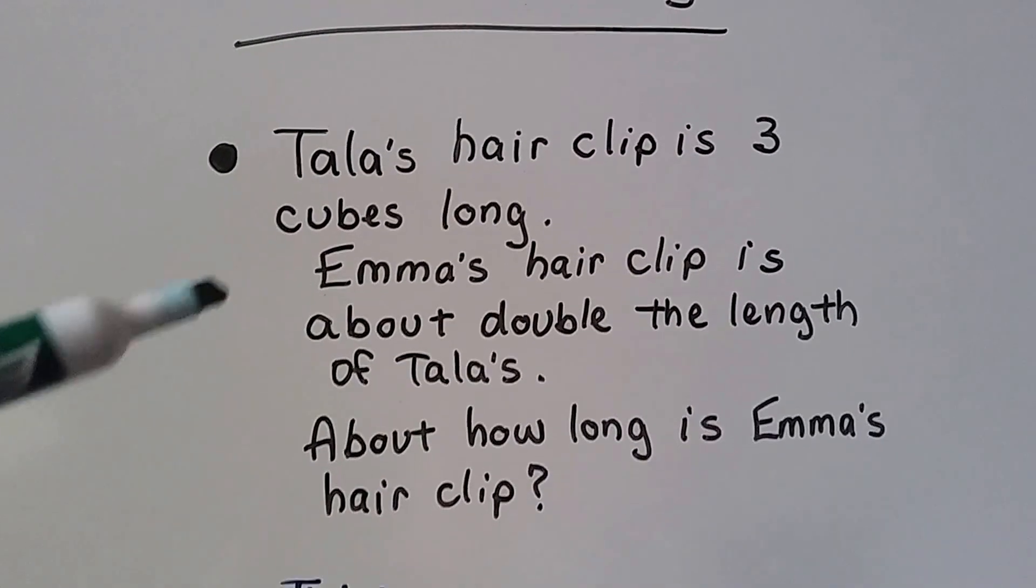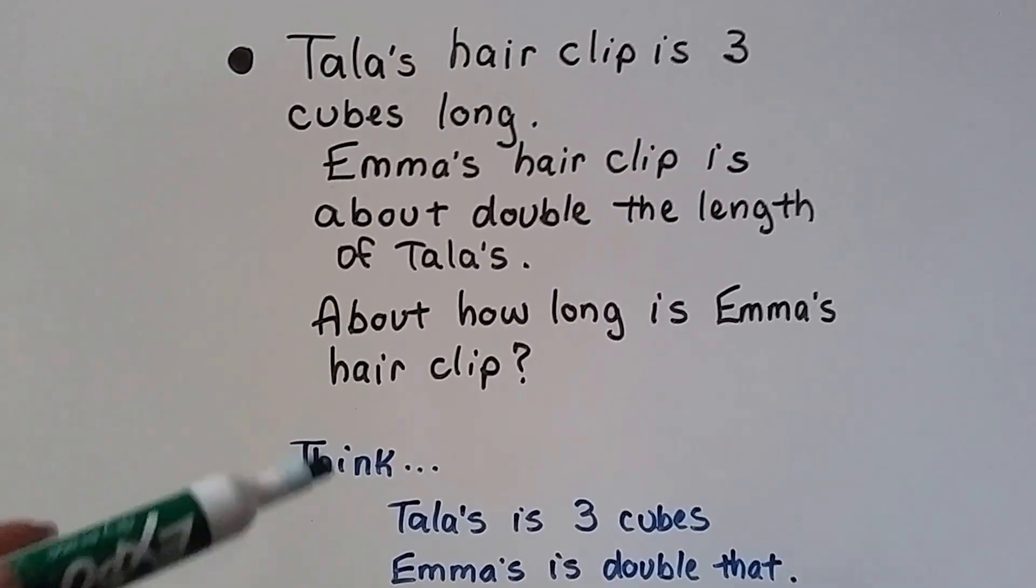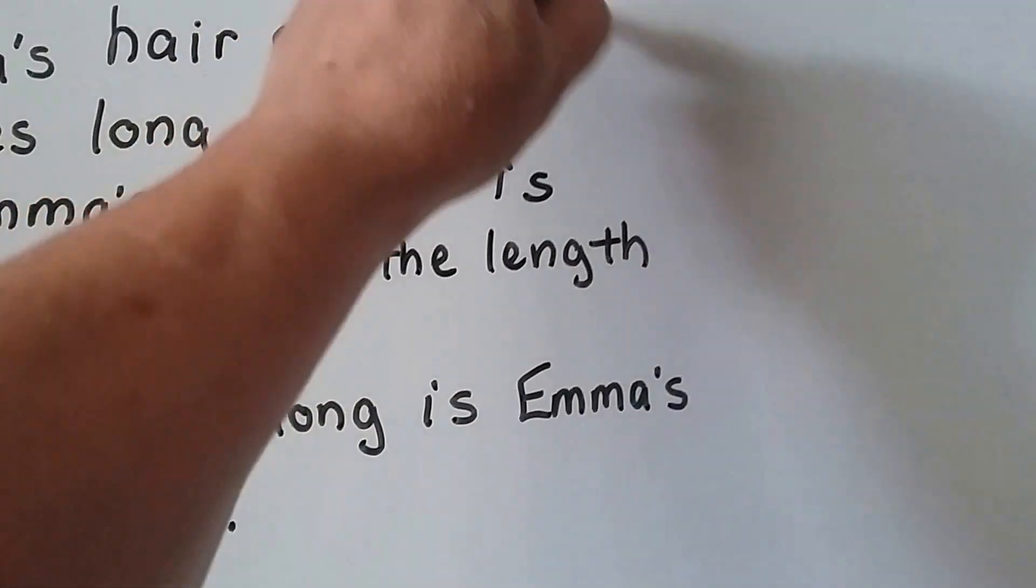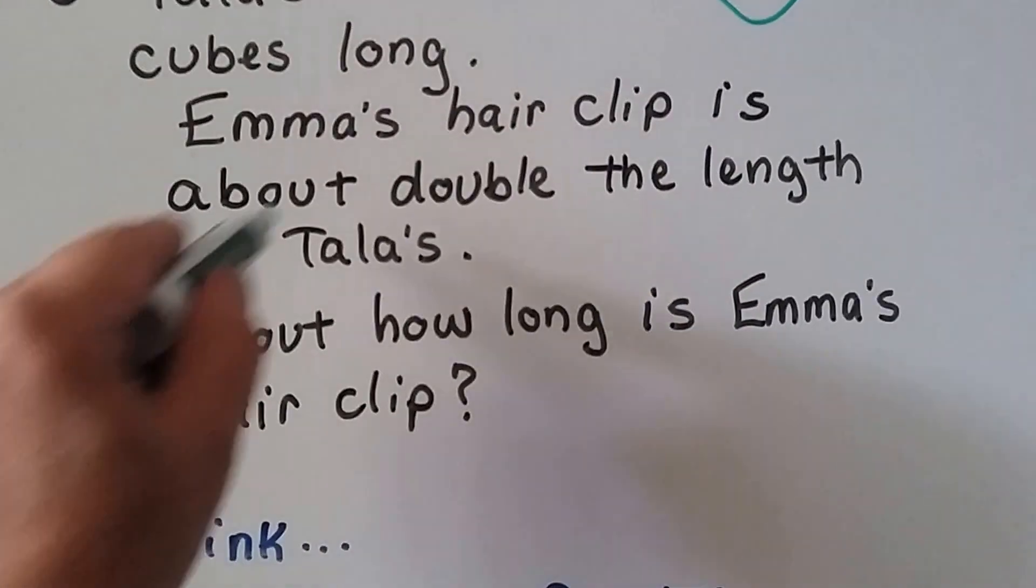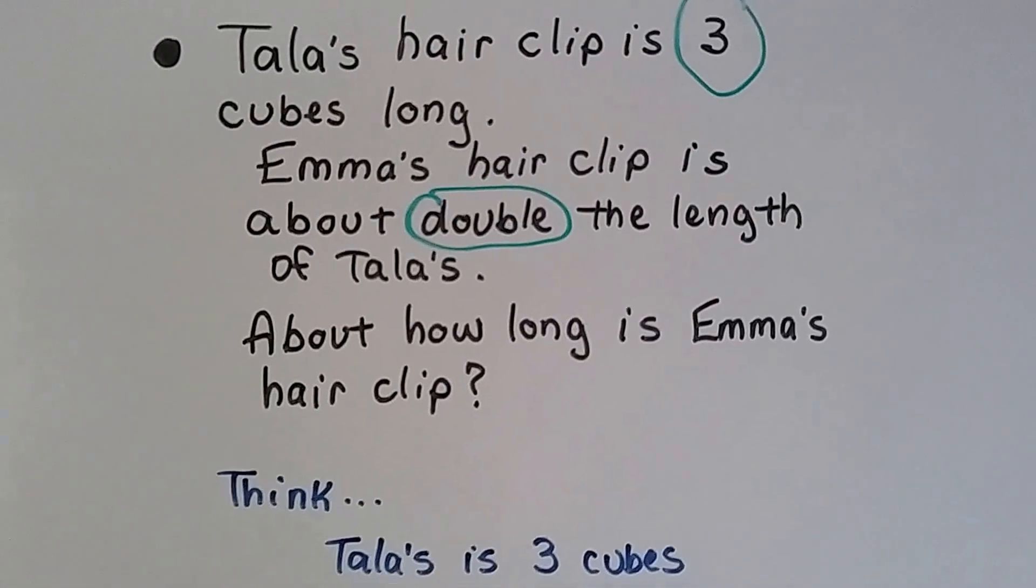Well we have to think about this. Tala's is three cubes so that's important. So we should circle that. Emma's is about double. Okay? So that's important.